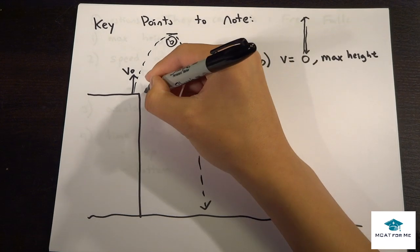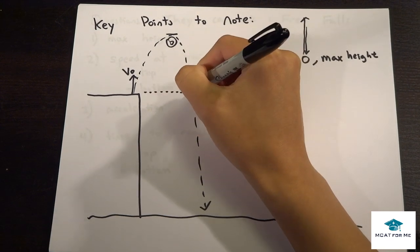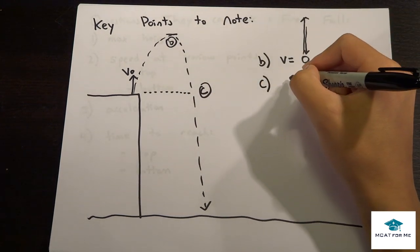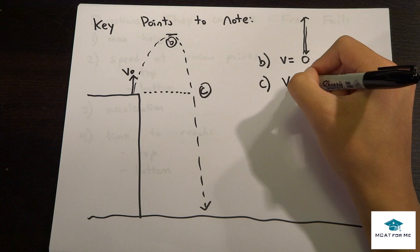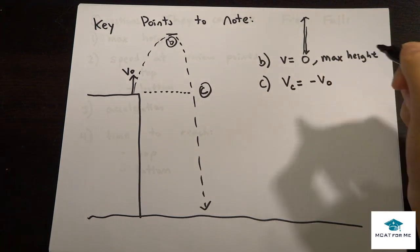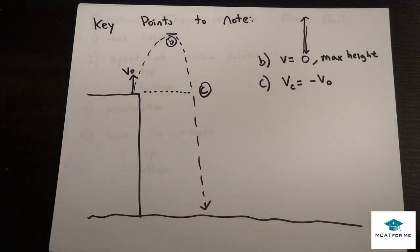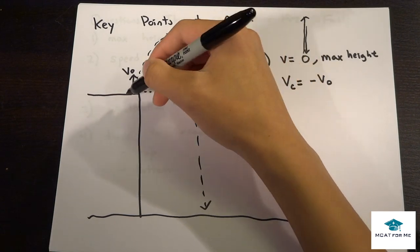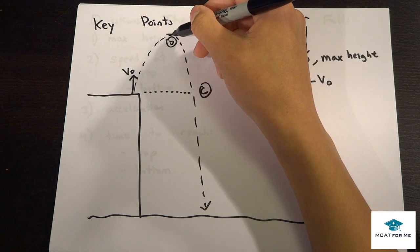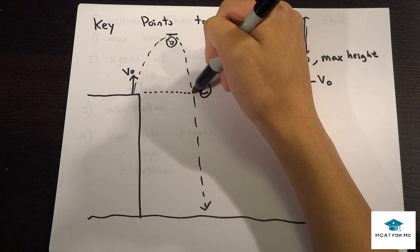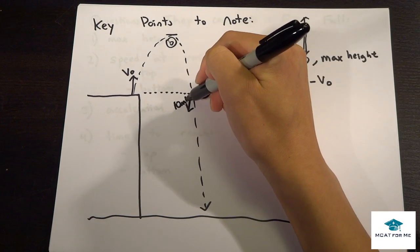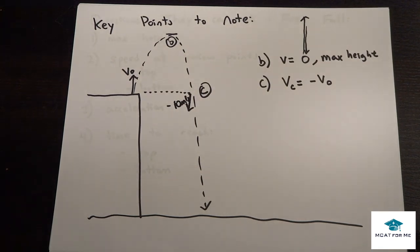C is the next one, and C is at the same height as where we started. So the velocity at C equals negative V0. That's saying that if I shot something at 10 meters per second, when it comes back down, it goes up to zero and when it comes back down at point C it will be going at 10 meters per second as well, but it's going to be going in the negative direction now. That's very important to note.